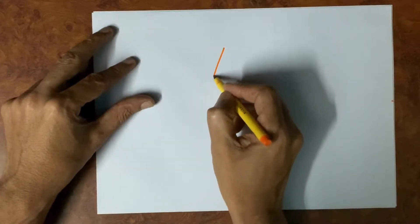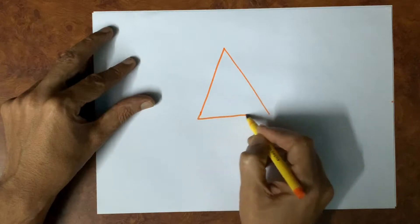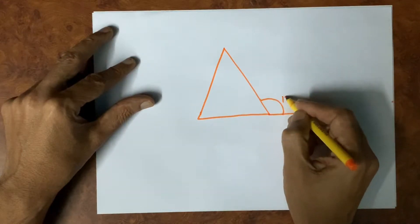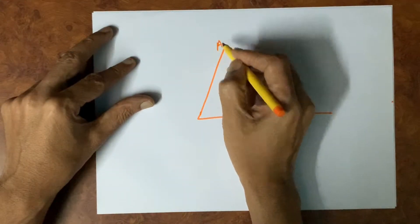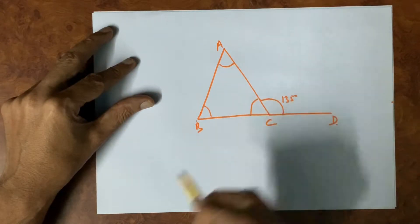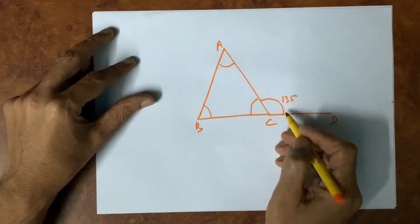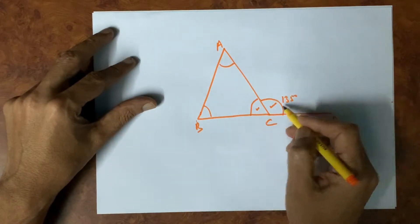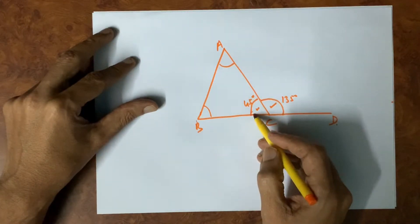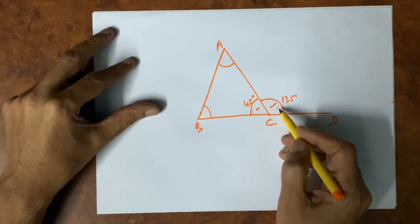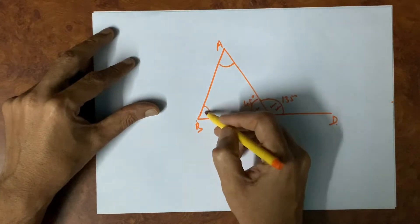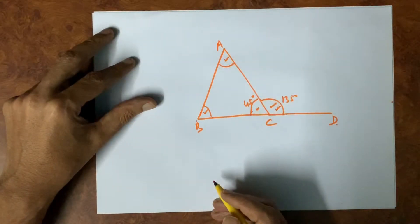Let us have a triangle. We have to calculate all the angles of the triangle. This is a supplementary angle — this plus this equals 180 degrees. So 135 plus 45 equals 180. And this exterior angle is equal to the sum of these two opposite interior angles.